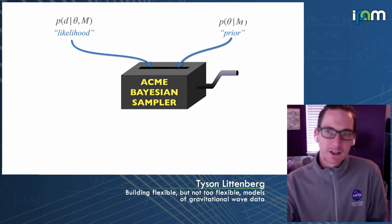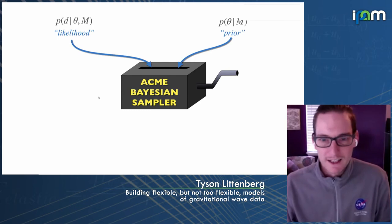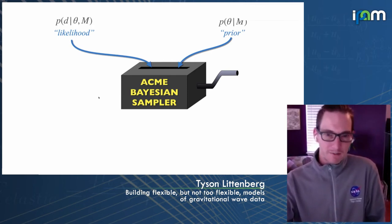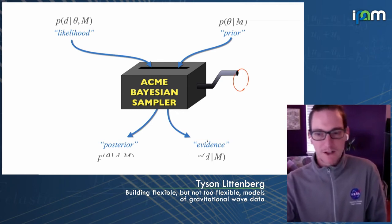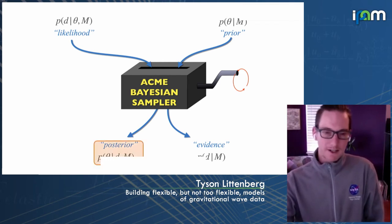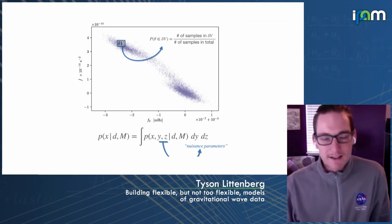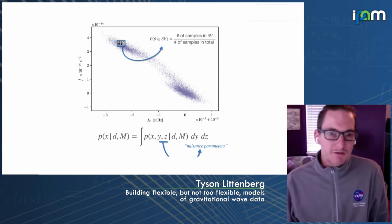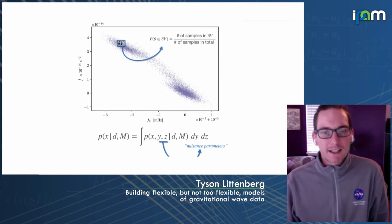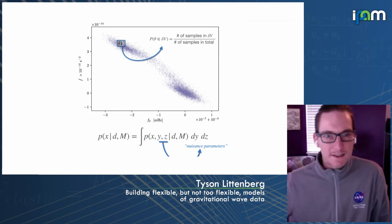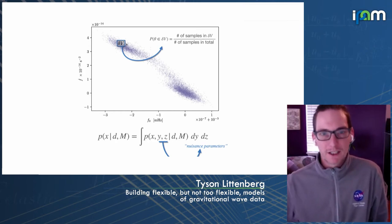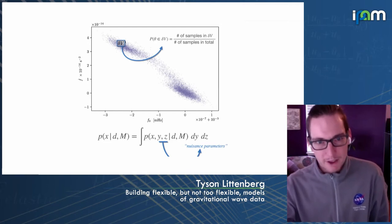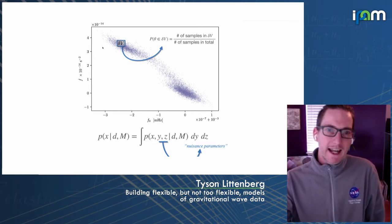If someone hands you a likelihood function and a prior—the things the analyst has to come up with—you can shove them into your favorite Bayesian sampler and turn the crank, and out pop the answers to your inference problem: the posterior. With a little extra work you can also get the model evidence. The output of one of these sampling algorithms is a bunch of random numbers distributed consistently with the posterior distribution, and you can count how many samples live inside a small volume in parameter space, divided by the total, to get the probability the true parameter lives there.